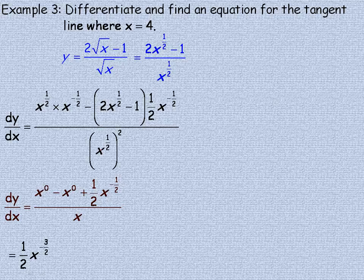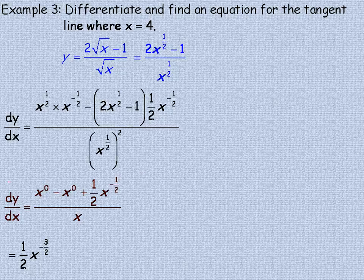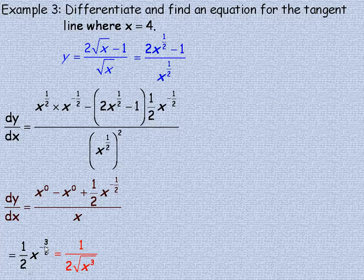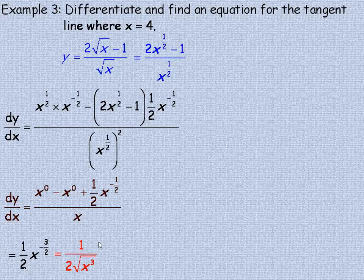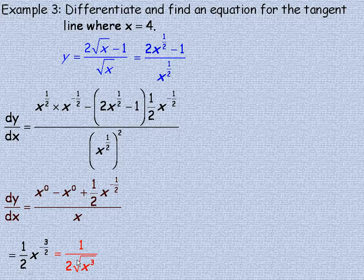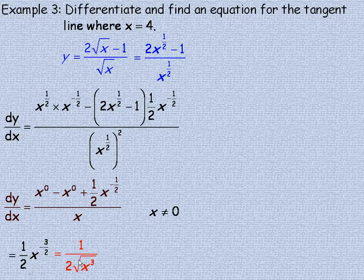So I get 1 half x to the negative 3 halves. And I would not normally want to write a rational exponent, and also not a negative 1. So I would normally write this as 1 over 2, so there's the 1 half. The 2 here means the square root of, and it would be x to the power of 3. So that's my derivative. Now since we have an x in the denominator, x can't have a value of 0, because then the denominator would have a value of 0, and we'd be dividing by 0. So that's why x cannot equal 0 is a restriction on this derivative.